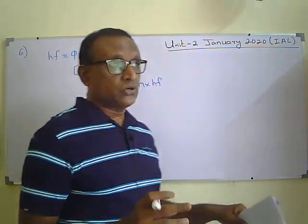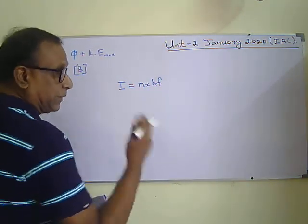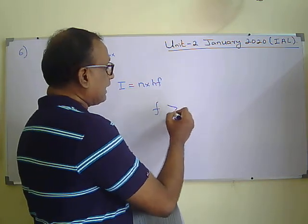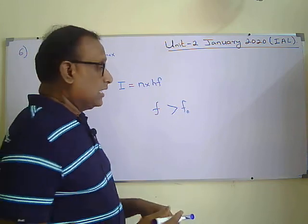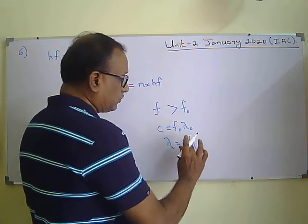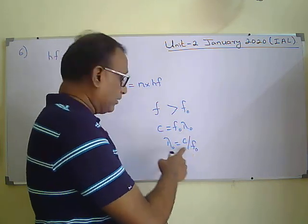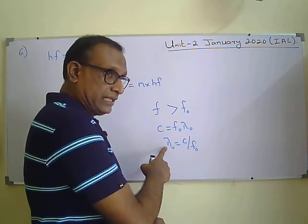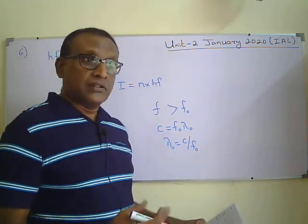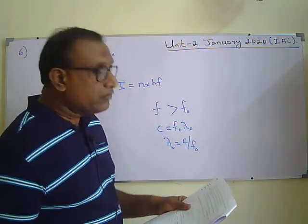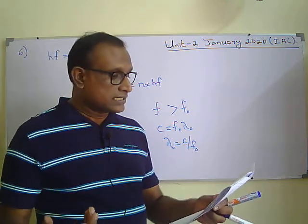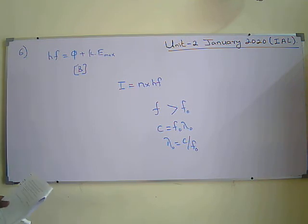Option D says only light with wavelength above a threshold value releases electrons. The threshold frequency f₀ is the minimum frequency needed to remove an electron; threshold wavelength λ₀ = c/f₀, so a smaller wavelength corresponds to a higher frequency. Any wavelength smaller than the threshold wavelength can release electrons — above the threshold wavelength, it cannot. Option D is wrong. The correct answer for question six is B.